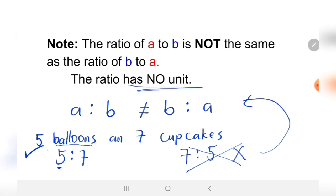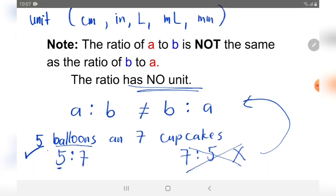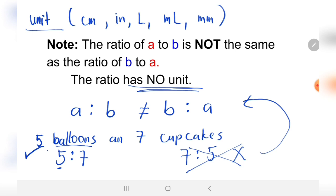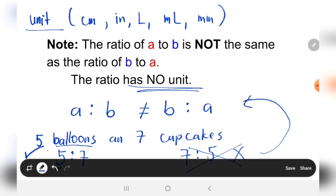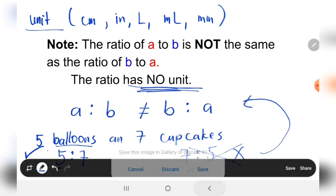Remember, and take note that the ratio has no unit. What does it mean by unit? Unit, for example: centimeter, inches, liter, milliliter, or millimeter. These are units. In ratio, we don't write units here, only the relative sizes. Remember: no unit.